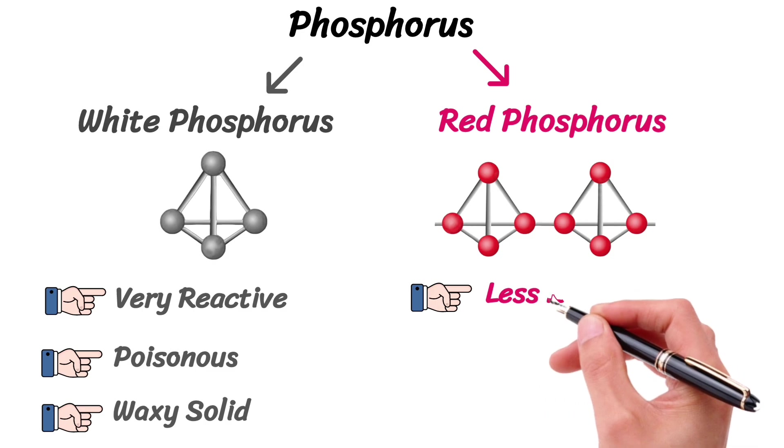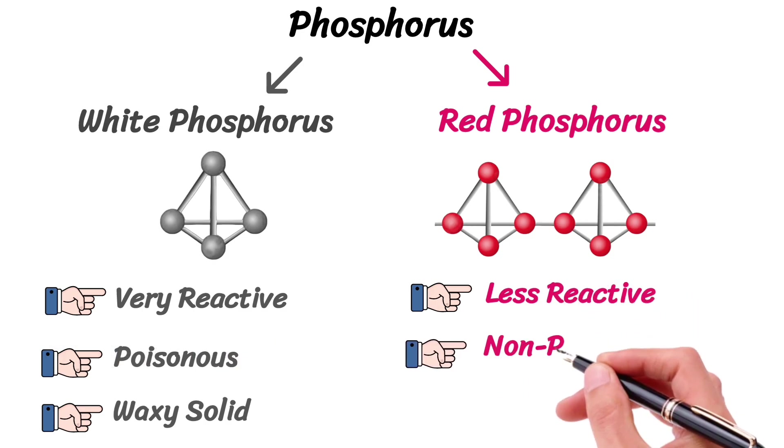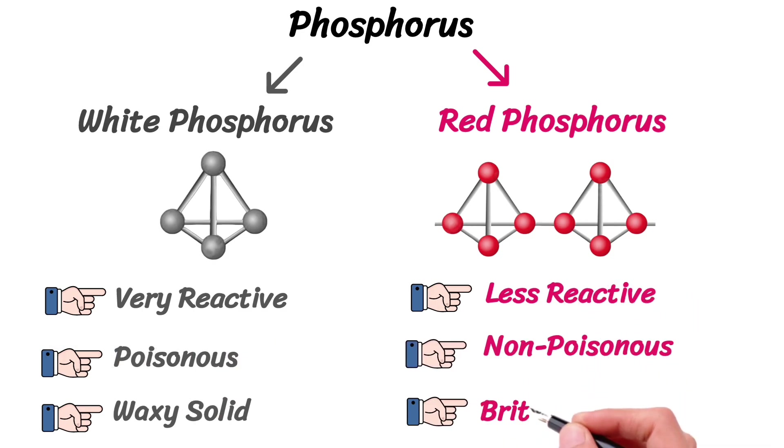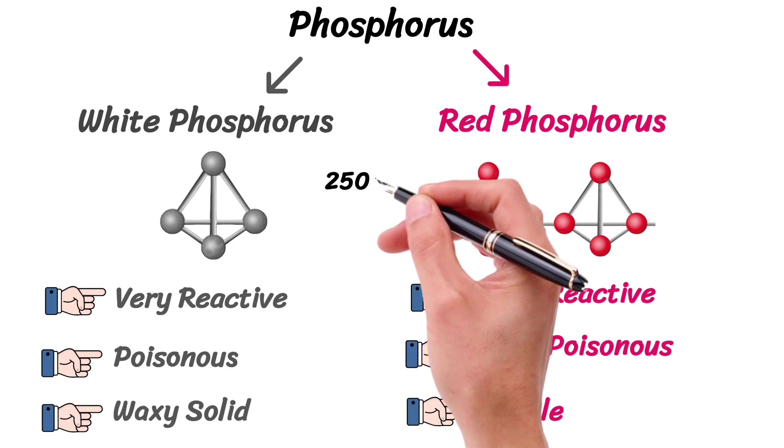While red phosphorus is less reactive, non-poisonous, and a brittle powder. The transition temperature of phosphorus is 250 degrees Celsius.